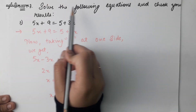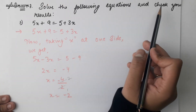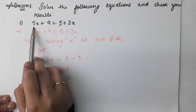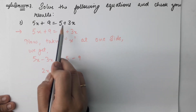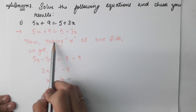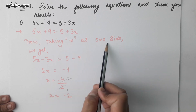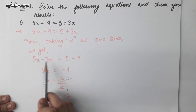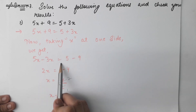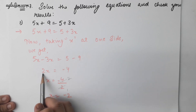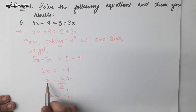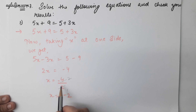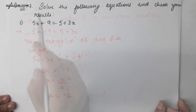Question number 3: solve the following equation and check your result. 5x plus 9 is equal to 5 plus 3x. Taking x to one side, we get 5x minus 3x equals to 5 minus 9, giving 2x is equal to minus 4. Therefore, x is equal to minus 2.